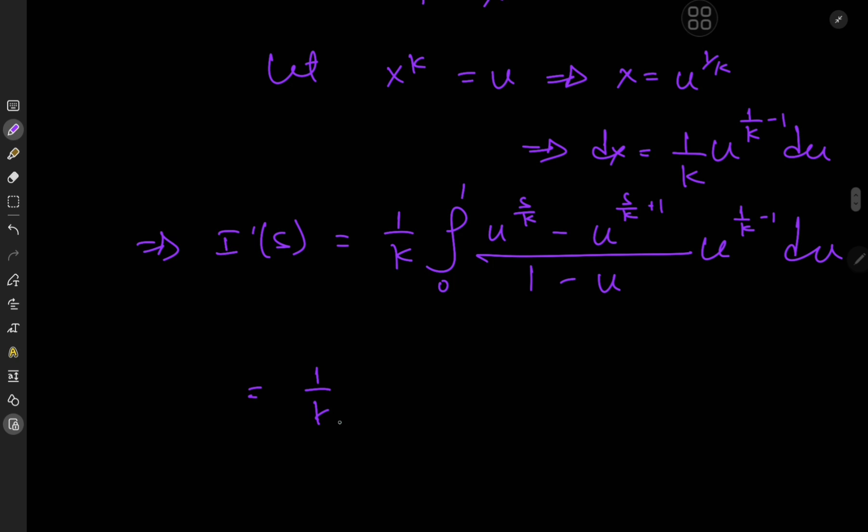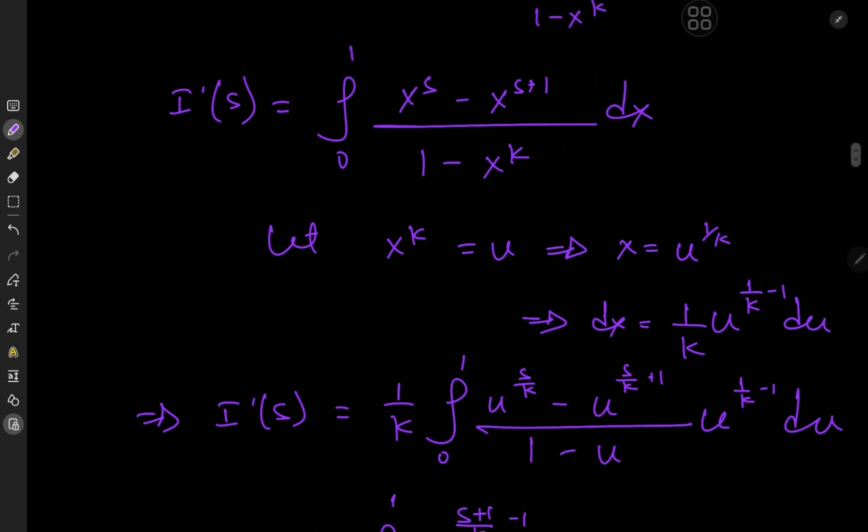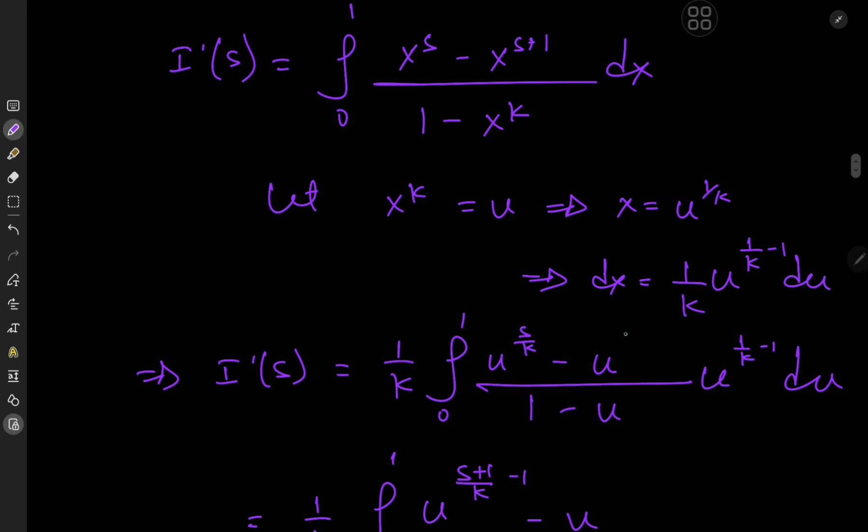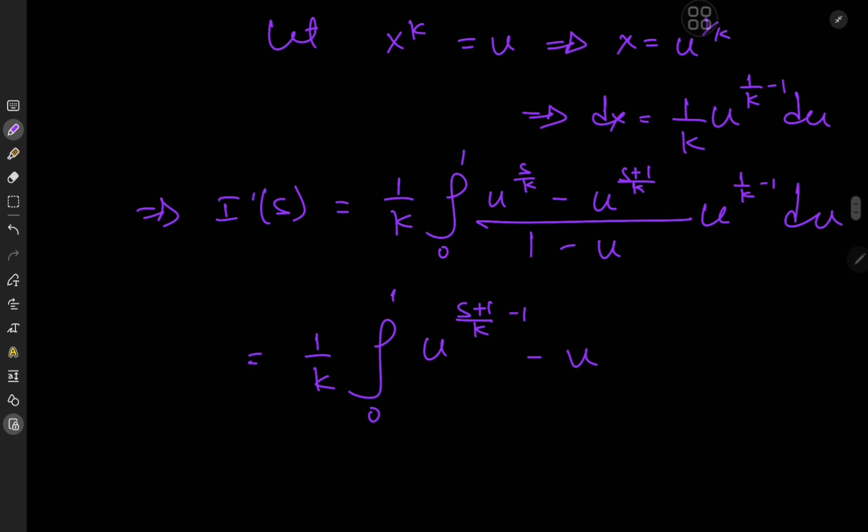This implies that I prime of s equals 1 by k times the integral from 0 to 1 of u to the s by k minus u to the s by k plus 1 divided by 1 minus u times u to the 1 by k minus 1 du. So we have 1 by k times the integral from 0 to 1 of u to the s plus 1 by k minus 1 minus u to the s plus 2 by k minus 1 divided by 1 minus u du.